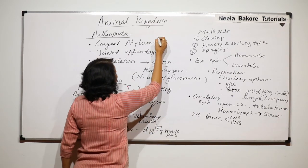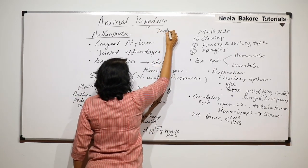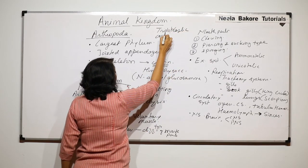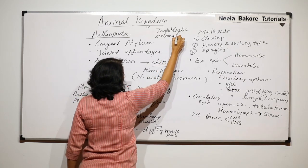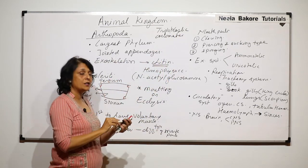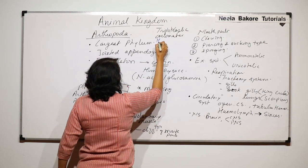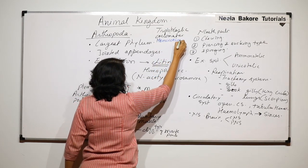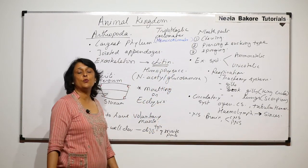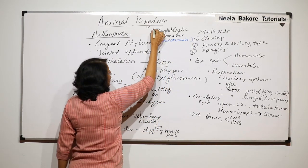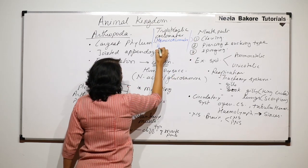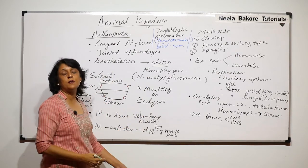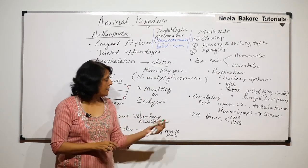In general, arthropods are triploblastic and coelomates, but specifically they are haemocoelomates because the cavity is filled with haemolymph. They are bilaterally symmetrical and the organ system level of organization is very well developed, as we have seen.